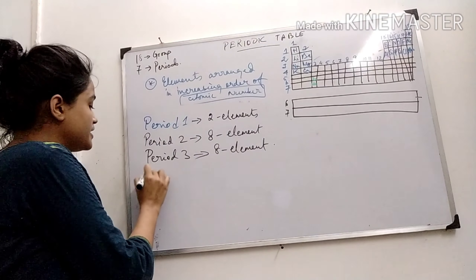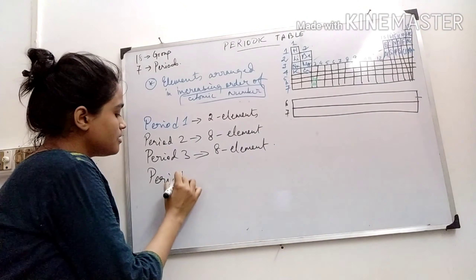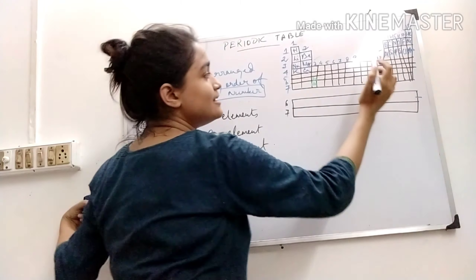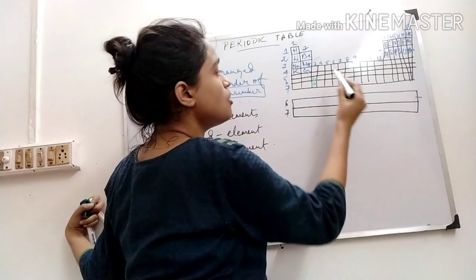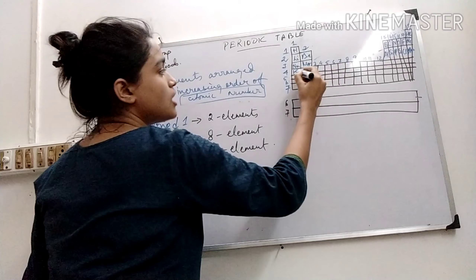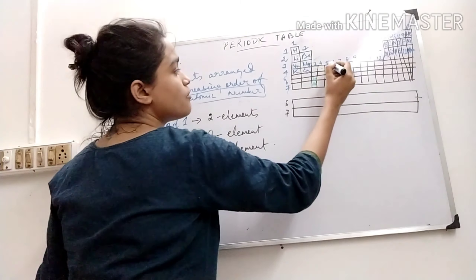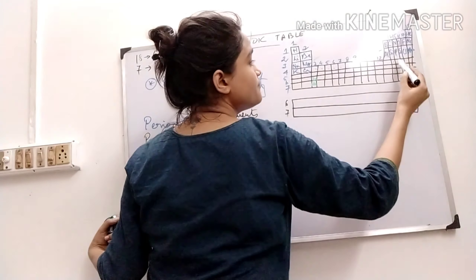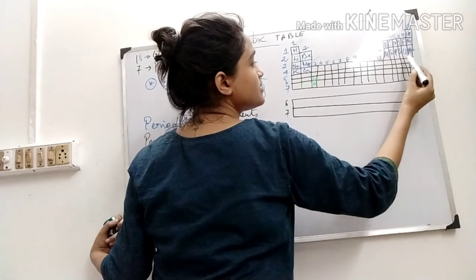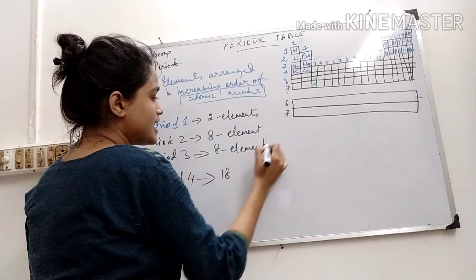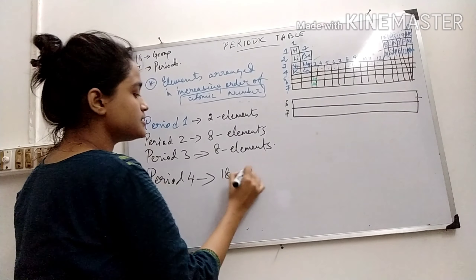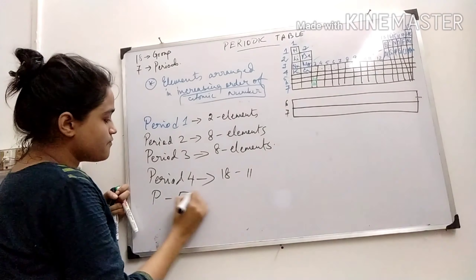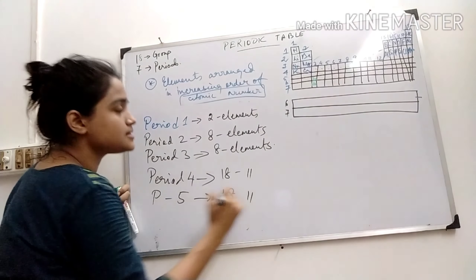From period 4, it has 18 elements — counting 1 through 18. So it has 18 elements. Period 5 also has 18 elements.